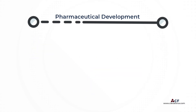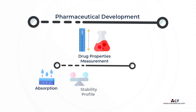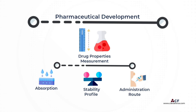The pharmaceutical development process begins by measuring the properties of the drug substance and identifying the critical quality attributes of the drug product that is required. This process will include checking the absorption and stability profile of the drug and the most appropriate route of administration: oral, parenteral, or local administration.